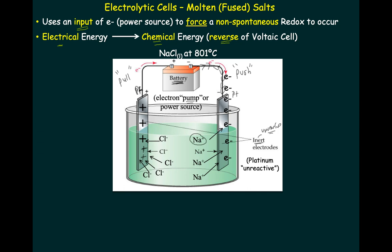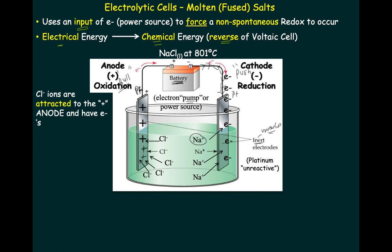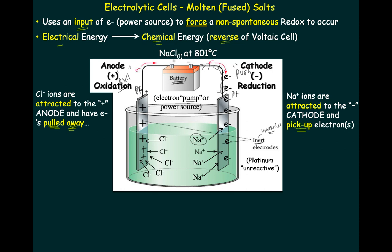If sodium ions are going to go and get an electron, they're going to become reduced, because they're going to grab an electron. Anytime you gain electrons, you're going to be reduced. And chloride ions, which have electrons as the minus one, are going to have electrons pulled from them and they're going to become chlorine gas. These ions are going to be migrating towards the appropriate cathode and anode. The anode in this case is going to be oxidation because electrons are going to be pulled by force away. This side is going to be the cathode because electrons are going to be added to whatever is touching the cathode. On one side at the anode, chloride ions are attracted to the positive anode and have electrons pulled away from them — that's your oxidation. On the other side, sodium ions are attracted to the cathode and they pick up electrons — that's reduction.